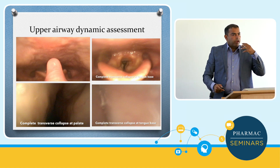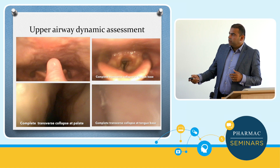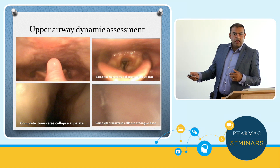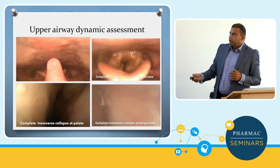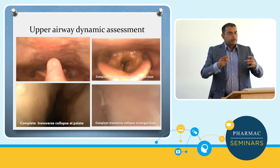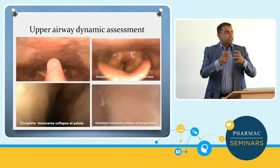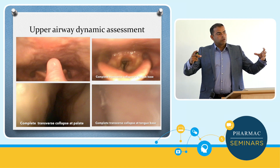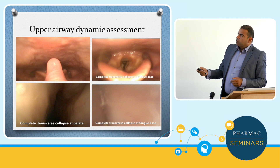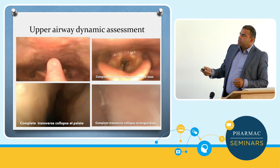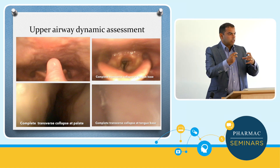Even though it looks like a grade 1 — and that's generally the only upper airway assessment they will have unless they see an ENT — their tonsils are doing that. That's the kind of pneumatic stenting that CPAP will have to do to keep those bulky tonsils apart. Further down at the level of the tongue base, the retrolingual airway again shows a complete transverse collapse driven by the tonsils.